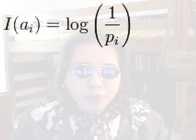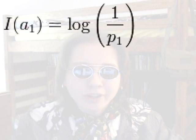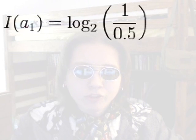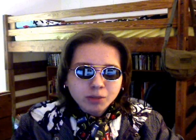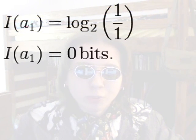We can calculate how much information we receive when we get a specific symbol from an information source. The equation is: the information i we receive when we get specific symbol i equals the logarithm of 1 over the probability of symbol i. So for symbol 1, I of symbol 1 equals log of 1 over p1. If symbol 1 is heads, the probability is 0.5, and since we're measuring in bits the base is 2. The information we receive when we get symbol 1 (heads) is 1 bit. For the broken coin, there's only one symbol with probability 1, so log base 2 of 1 over 1 is 0 — we receive 0 bits of information.